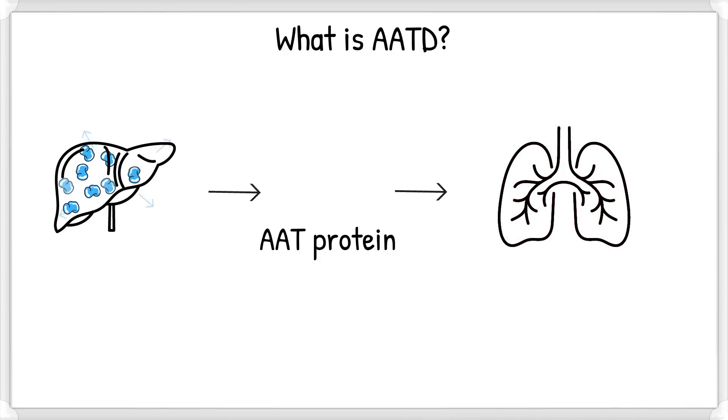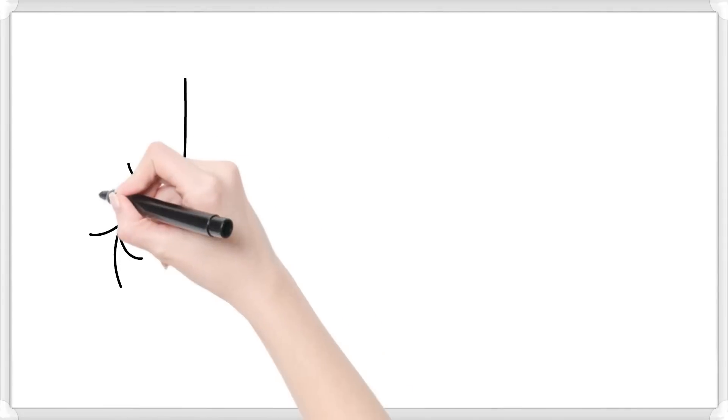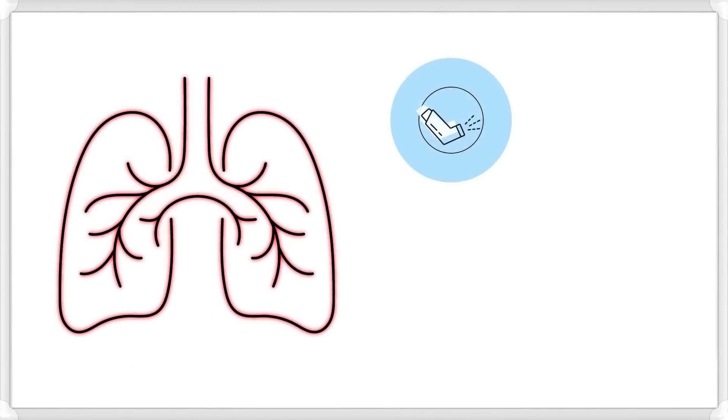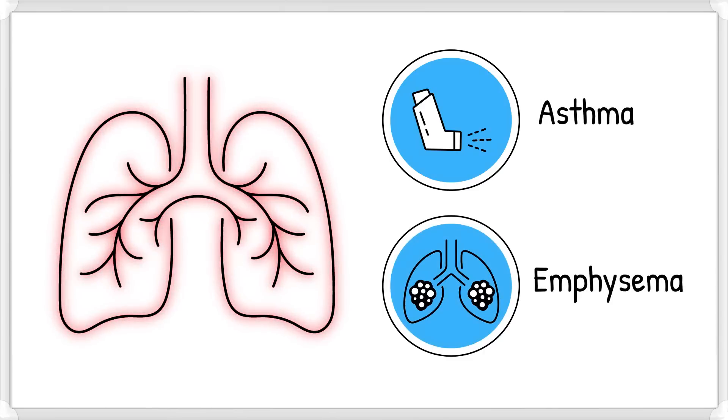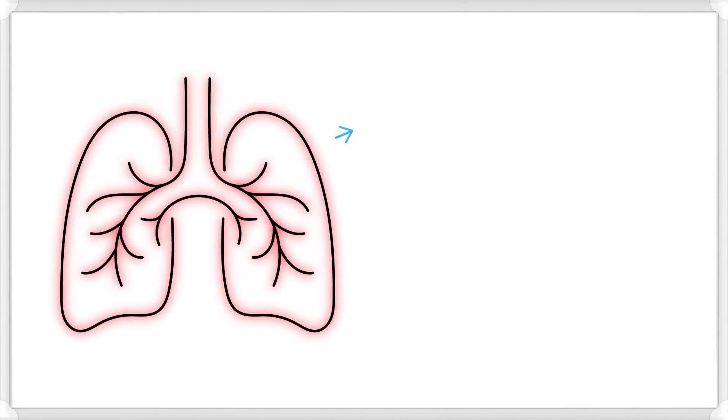One reason could be that AAT is not able to leave the liver, so it builds up in the liver cells, putting patients with AATD at higher risk of developing liver disease, such as cirrhosis or scarring in the liver. And without the added protection of AAT in the lungs, the risk for developing lung conditions such as asthma, emphysema, and other lung conditions also increases in patients with AATD.